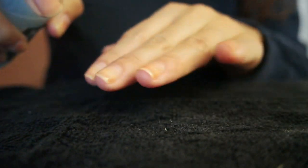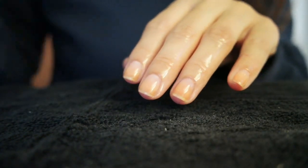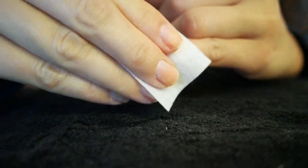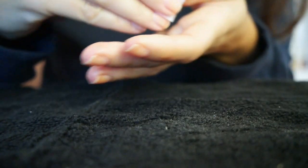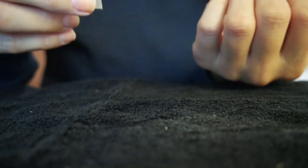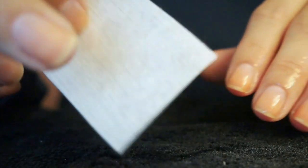Once that base coat has cured, we're going to spray the nails with a surface cleanse. This is important because when the nails come out of the lamp, they tend to be a little sticky, and this will remove that sticky residue. You can also use alcohol. Both work great. Just make sure you do this with a lint-free wipe.